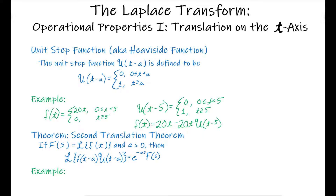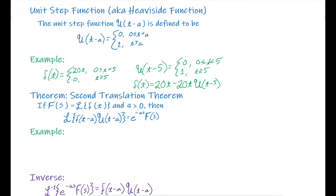This brings us to what's called our second translation theorem. If F(s) equals the Laplace transform of f(t), and a is greater than 0, then the Laplace transform of f(t minus a) times the unit step function of t minus a equals e to the negative as times F(s). Let's consider a function f(t) = 2 minus 3 times the unit step function of t minus 2, plus the unit step function of t minus 3 — a piecewise function rewritten using unit step functions.